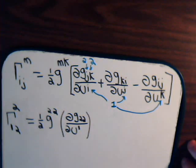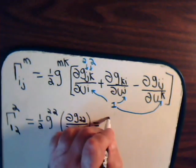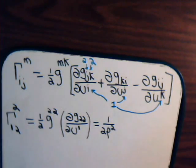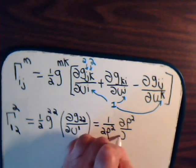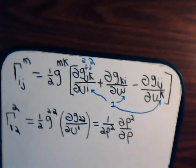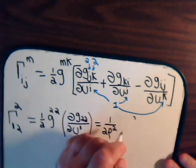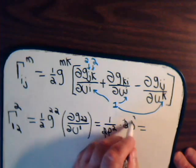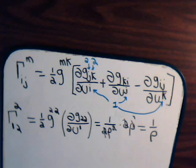So, here's our expression for gamma 1, 2, 2, where this is 1 over rho squared. So, this equals 1 over 2 times rho squared. And, of course, this is the partial of rho squared with respect to rho. Now, the partial of rho squared with respect to rho is just 2 times rho. Times 2 times rho equals, and that's just going to be 1 over rho. So, there's our first Christoffel symbol.